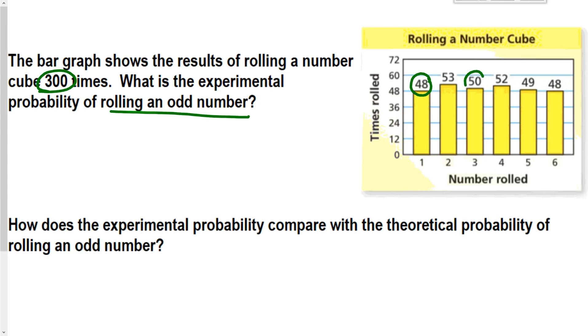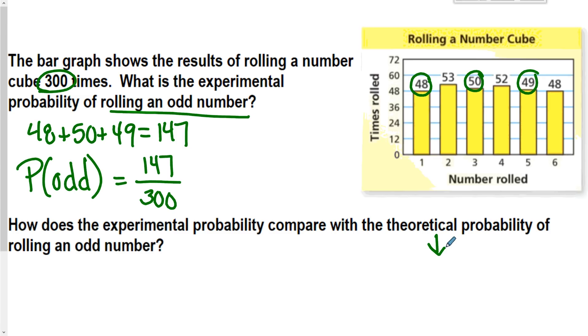48 plus 50 plus 49. I'm going to add up all the times I rolled an odd. I get 147. So my experimental probability of rolling an odd was 147 over 300. So how does this compare to the theoretical probability? Well, I know the theoretical probability of an odd.